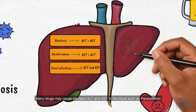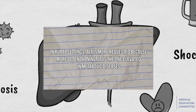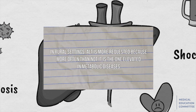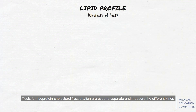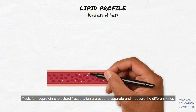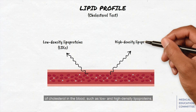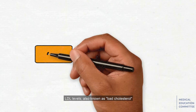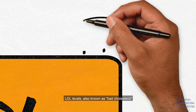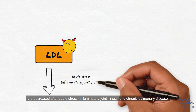Many drugs may cause elevated ALT and AST in the blood, such as paracetamol. Lastly, we're going to take a look at the lipid profile. Tests for lipoprotein cholesterol fractionation are used to separate and measure the different kinds of cholesterol in the blood, such as low and high-density lipoproteins. Here are the normal values. LDL levels, also known as bad cholesterol, are decreased after acute stress, inflammatory joint illness, and chronic pulmonary disease.